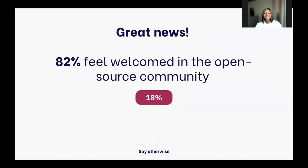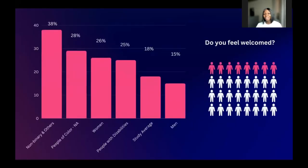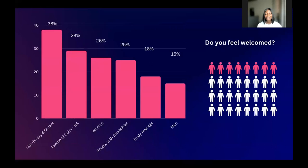It is often said that the state of a community can be considered friendly and welcoming, but it all depends on who exactly was asked the question, and where or how the questions were asked. When the question of 'do you feel welcome within open source' was thrown, we saw that 38% of non-binary and third gender persons did not feel welcome within their communities, whereas 28% of people of color specific to North America did not feel welcome. 26% of women came out to say they do not feel welcome, and 25% of people with disability.